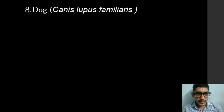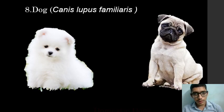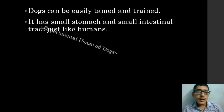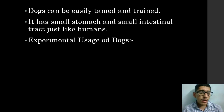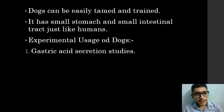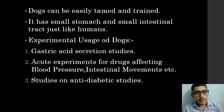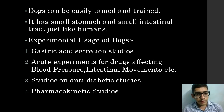The eighth and final animal is dog. Its biological name is Canis lupus familiaris, commonly known as the domestic dog. Dogs can be easily tamed and trained. They have a small stomach and small intestinal tract, but it is similar to that of humans. Experimental uses include: gastric acid secretion studies; acute experiments for drugs affecting blood pressure, intestinal movements, etc.; studies on anti-diabetic drugs; and pharmacokinetic studies.